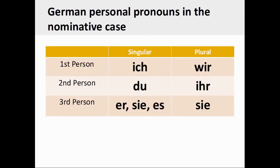German personal pronouns can be classified in the same manner. The singular personal pronouns in German are: ich (first person singular), du (second person singular), and er, sie, es (third person singular).